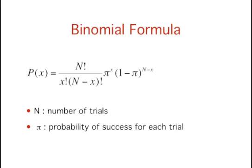The formula for the binomial distribution is shown here. P of x is the probability of x successes out of n trials, n is the number of trials, and pi is the probability of success on a given trial.